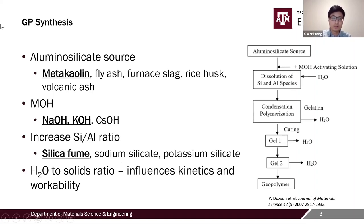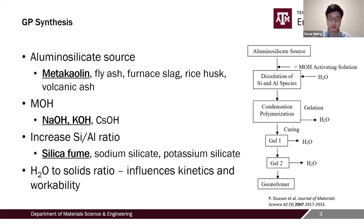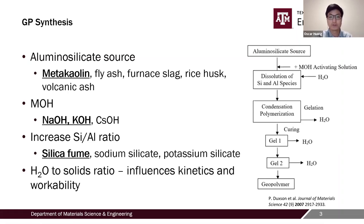A little background on geopolymer: there are a couple of components that make it up. The most important one is the aluminosilicate source. Some examples are metakaolin, fly ash, furnace slag, rice husk, and volcanic ash.